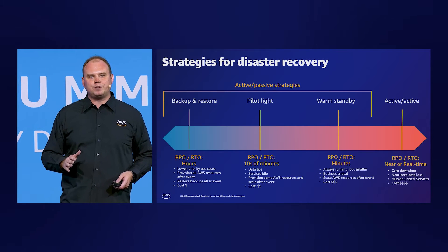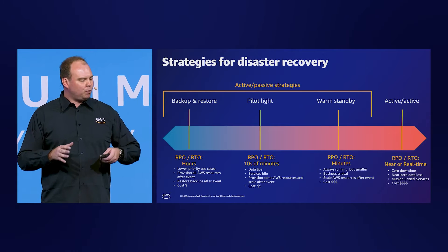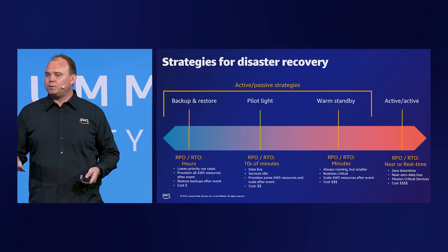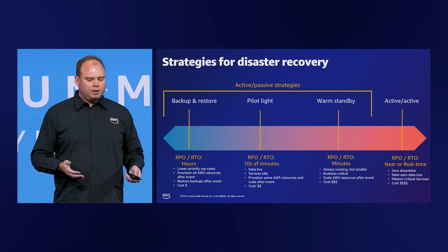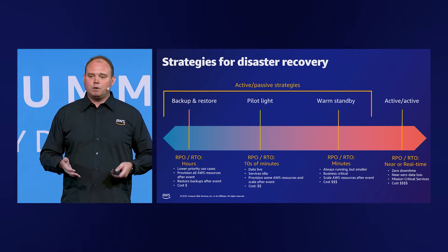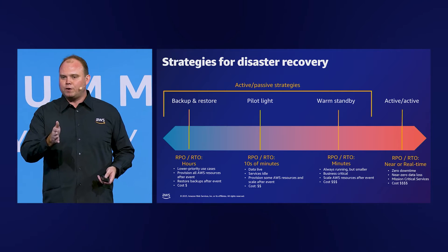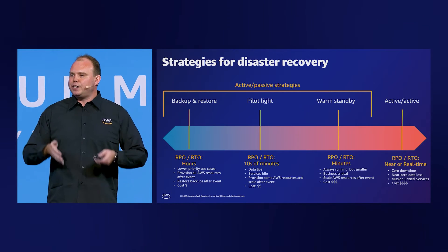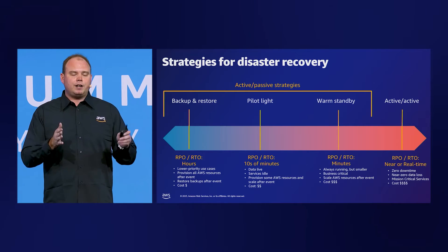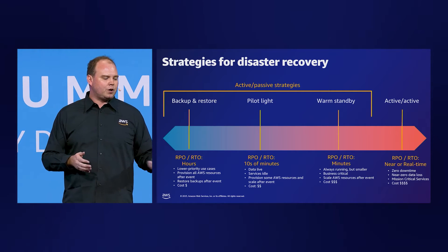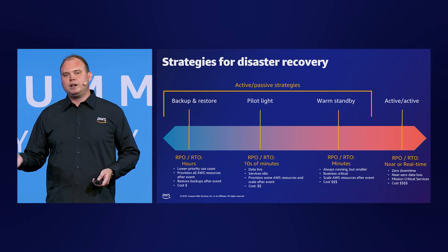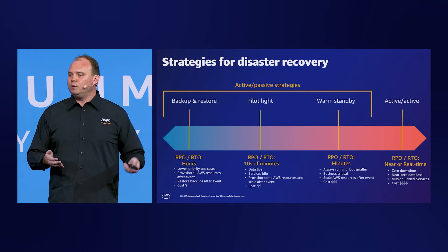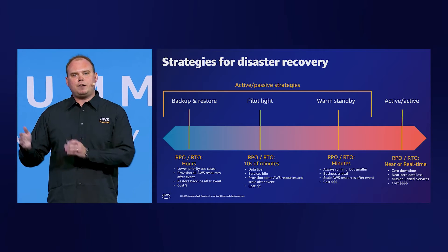There are a lot of different strategies for this, and they're not all one-size-fits-all. It's important that we think about them in terms of their RPO and RTO. RPO, or recovery point objective, is basically from the time that we have our large event that caused a failure, how much data have we lost? RTO, or recovery time objective, is how long it actually takes us to recover. If we understand our RPO and RTO, we're able to understand how much data we're losing and how long it takes to recover.